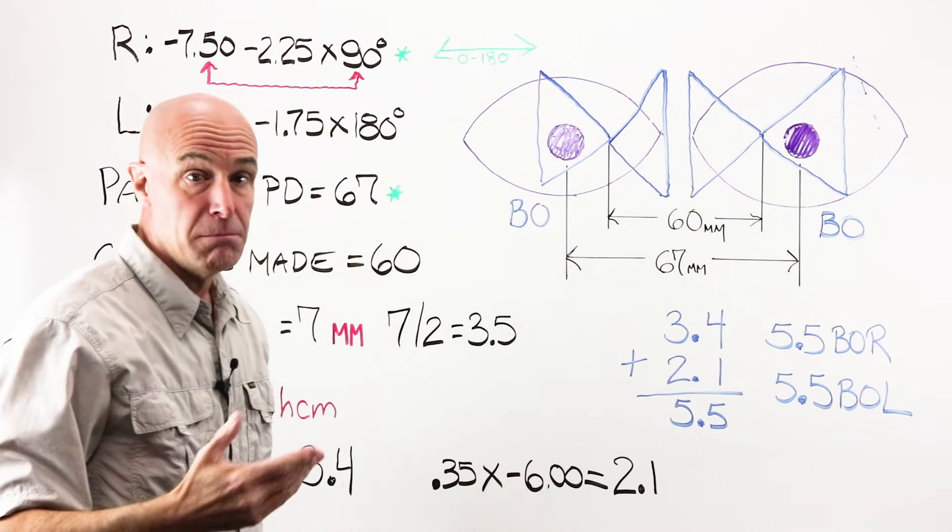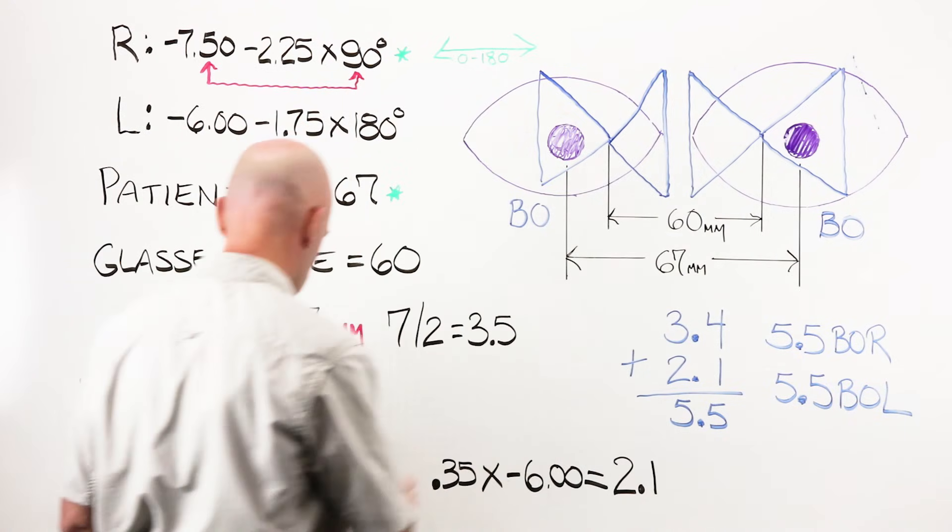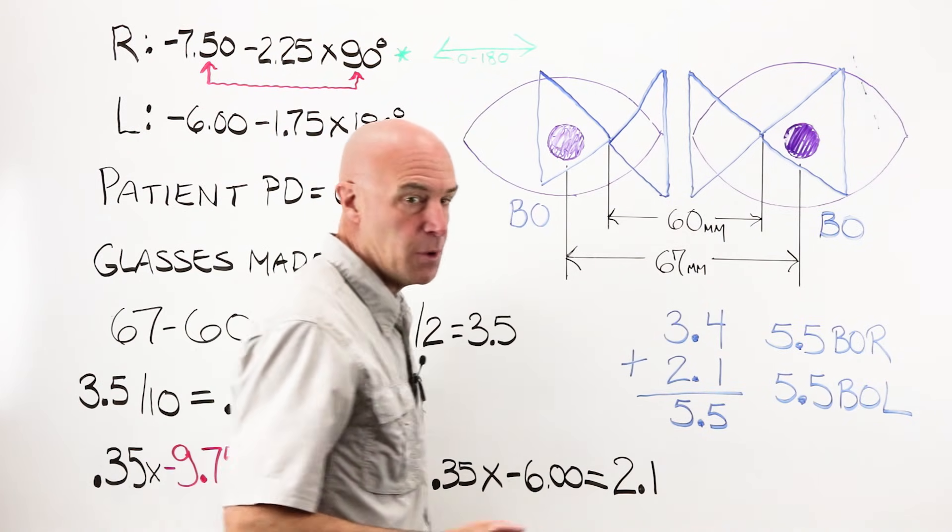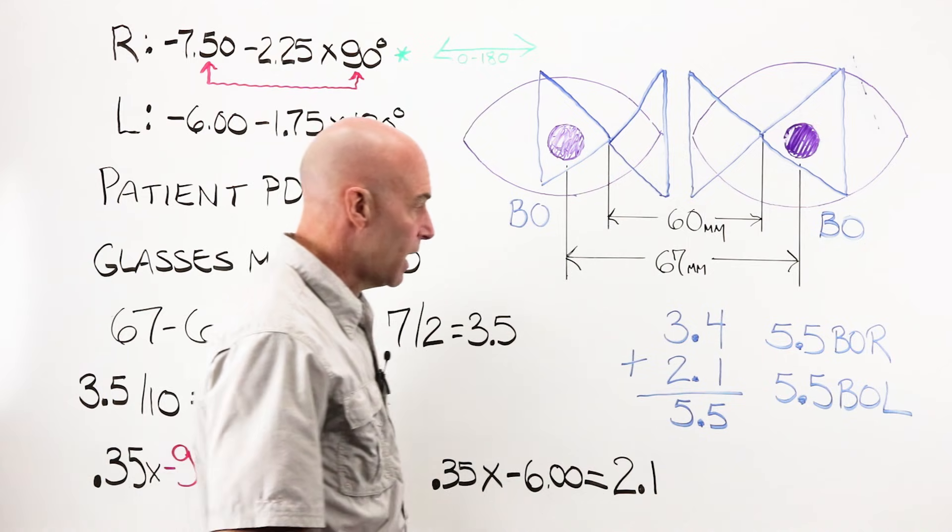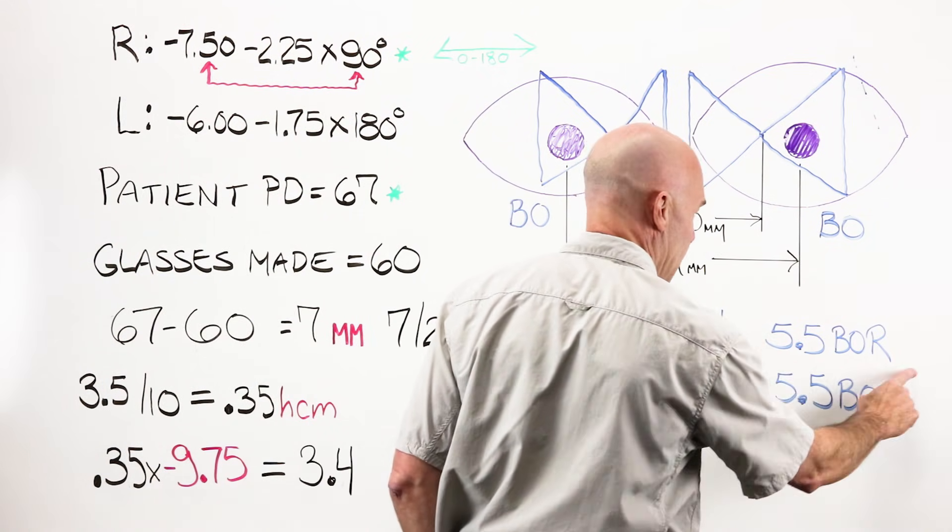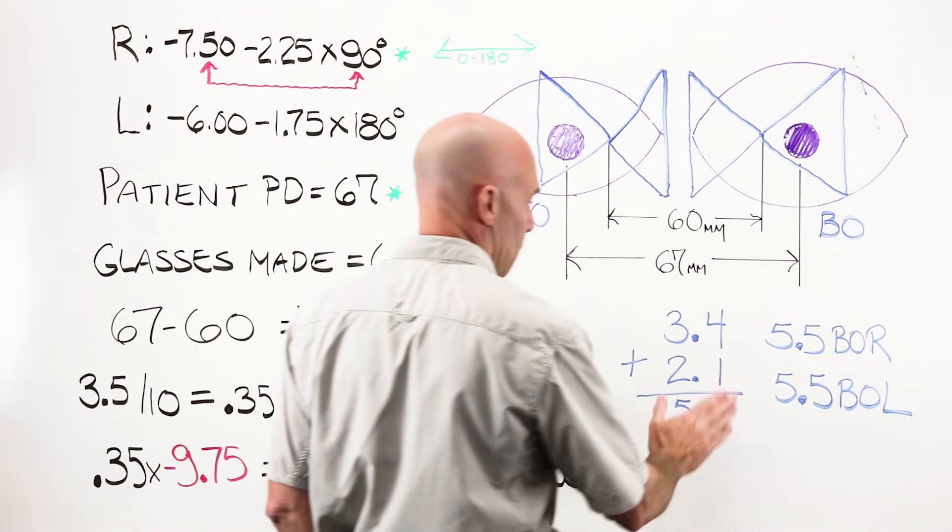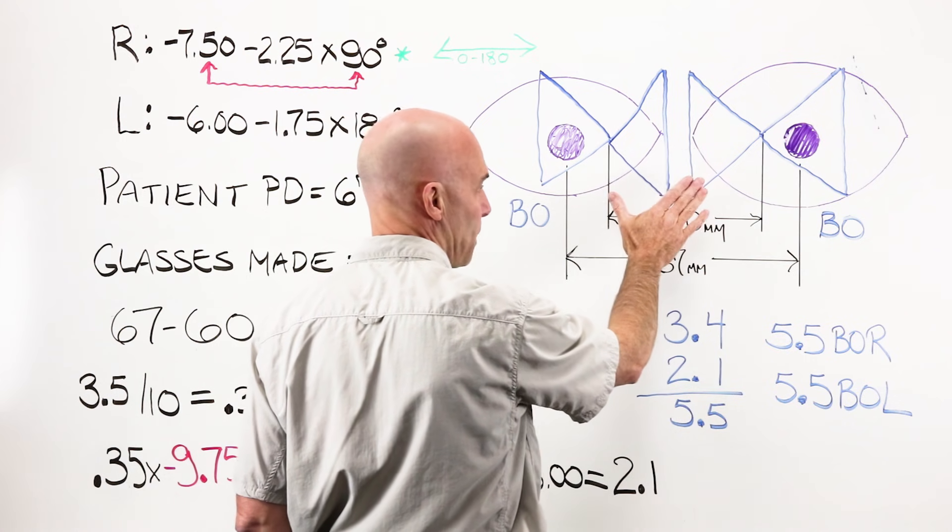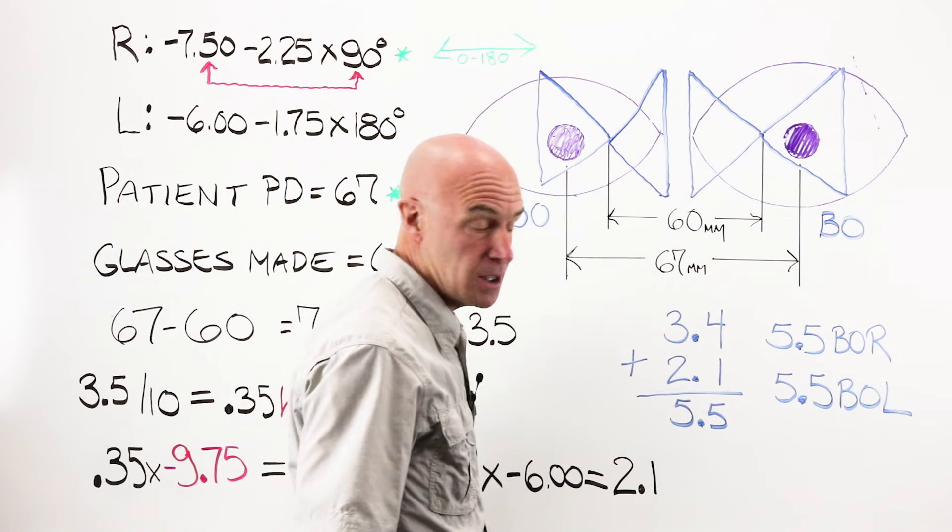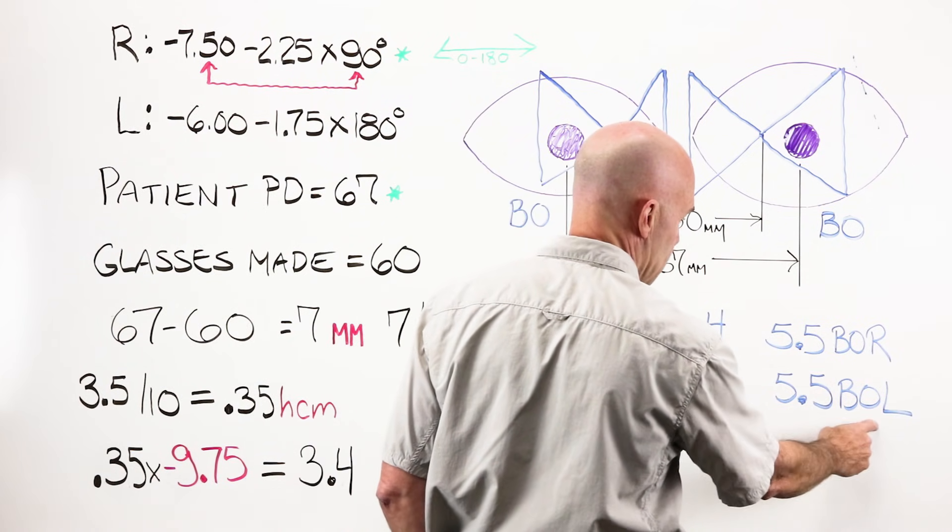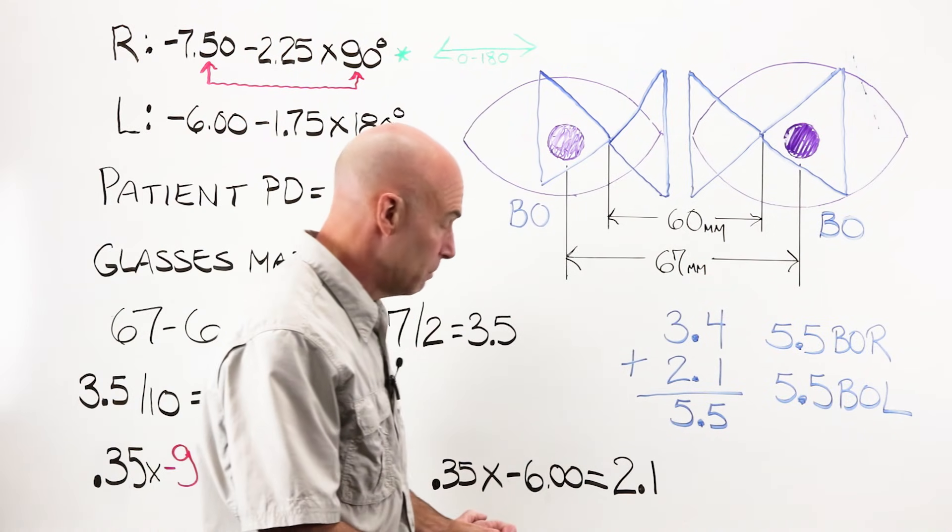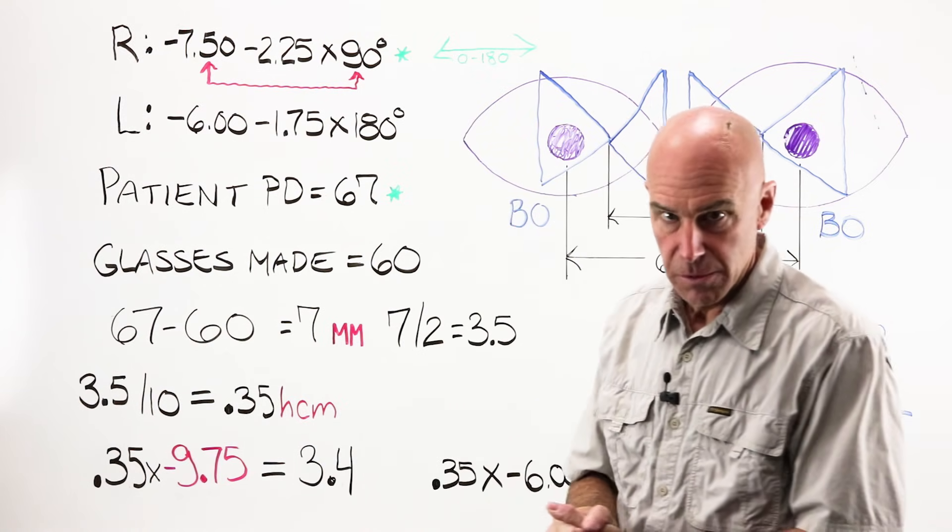Base-out, base-out combines. So I'm taking my 3.4 and I'm adding it to my 2.1, my right and my left, for a total of 5.5. When I compound, I write the entire prism amount out for both eyes. The total result that this person putting this pair of glasses on would experience would be 5.5 prism diopters base-out in the right and 5.5 prism diopters base-out in the left as well.